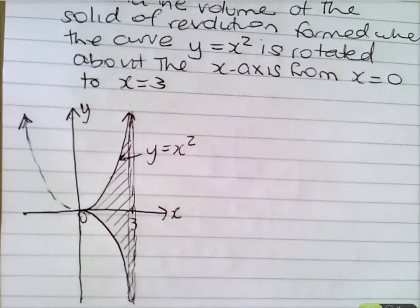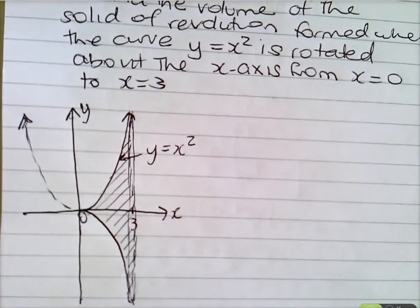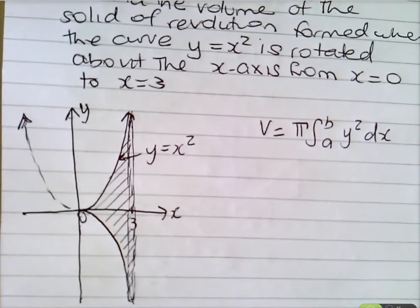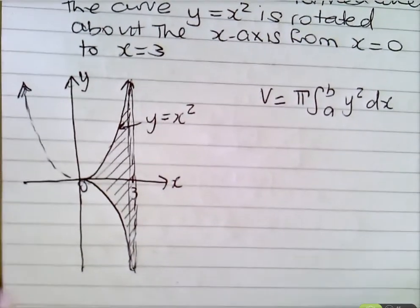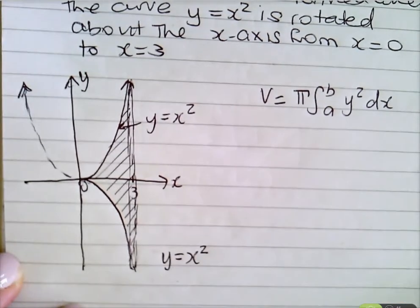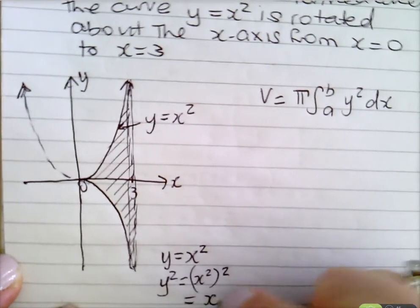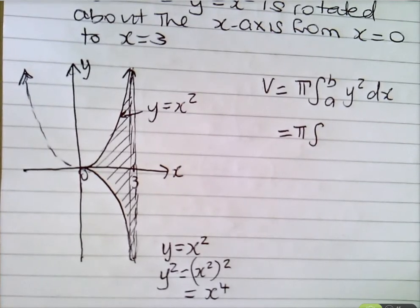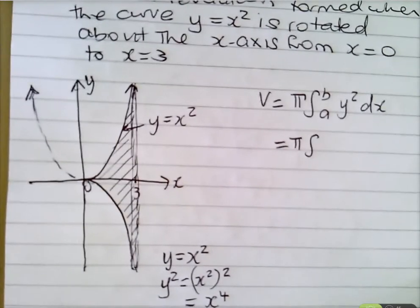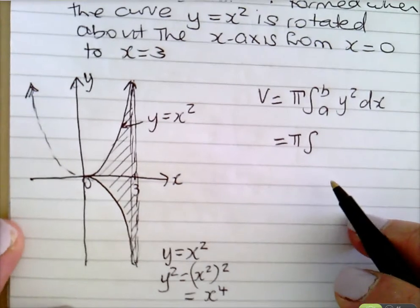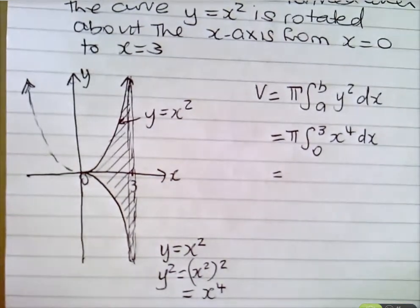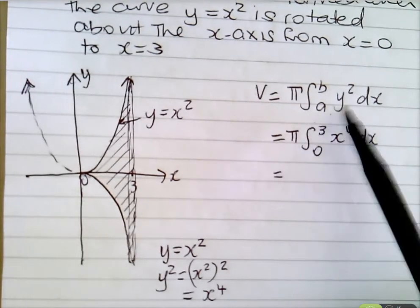These are not difficult, provided you write the formula down and substitute correctly. With volumes, the formula is your friend: volume is pi times the integral from b to a of y squared dx. They didn't give me y squared, they gave me y. So if y is x squared, y squared is x squared squared, which is x to the power of 4.